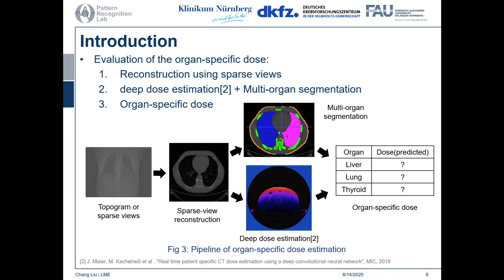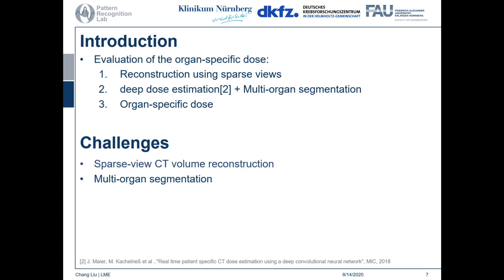With the sparse view reconstruction, we segment the organs using multi-organ segmentation. At the same time, we estimate the 3D dose distribution using deep dose estimation. Combining the location and area of organs with the 3D dose distribution, we can obtain the organ-specific dose.